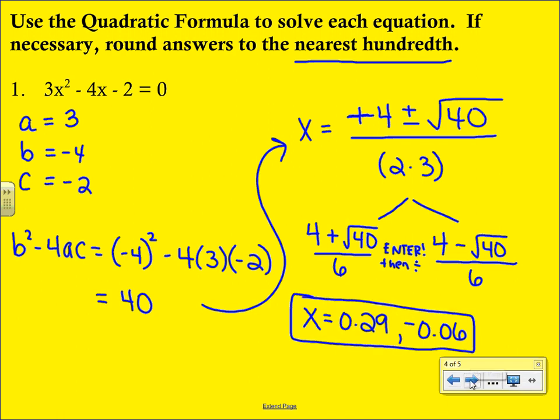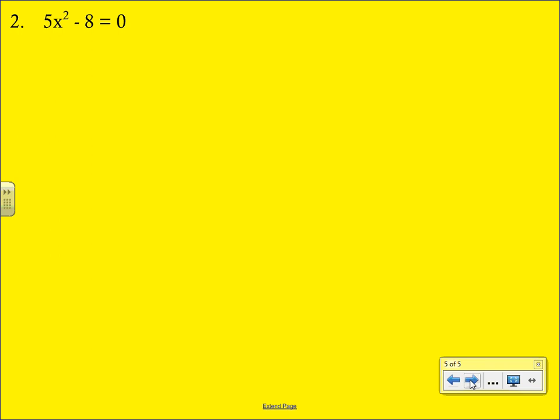Our next problem, and this will be our last example, we'll again start with the ABCs. For this one, a is 5, b is 0 because we are missing that x term, and then c is a negative 8. So we're going to go through the same steps of finding the discriminant, and we're going to plug those values in. So 0 squared minus 4 times 5 times negative 8, and when you put all of this in, you end up with 160.